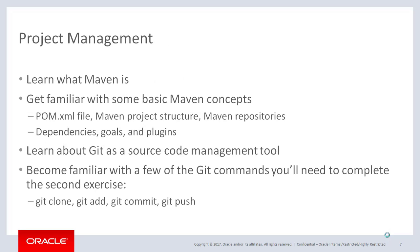In the Project Management section, you'll learn what Maven is and become familiar with some of the basic Maven concepts, such as the POM file and Maven project structure, repositories, dependencies, goals, and plugins. You'll see why we use Git as our primary source code management tool in Oracle Cloud, and you'll become familiar with just the Git commands you'll need to complete the second exercise.